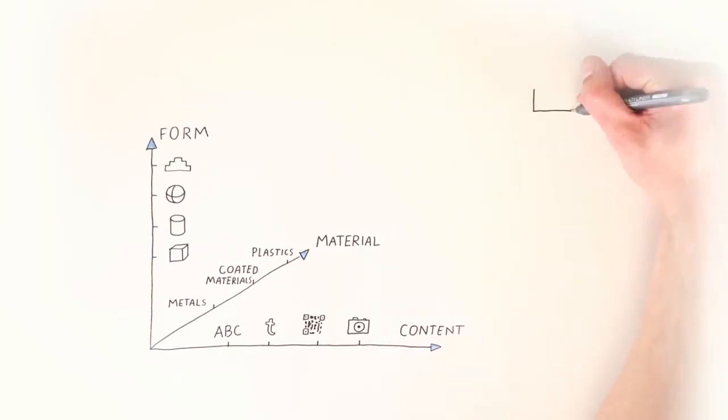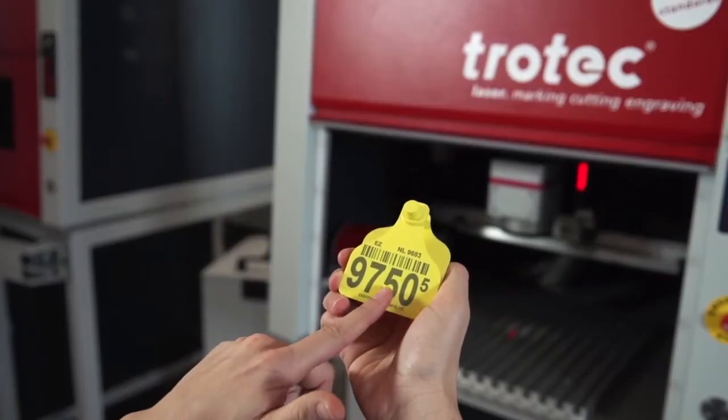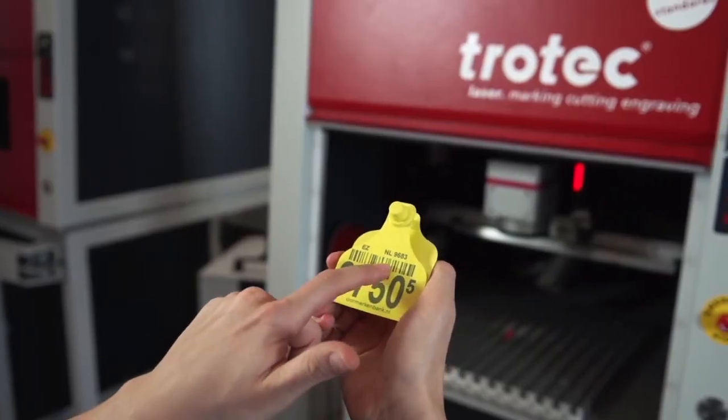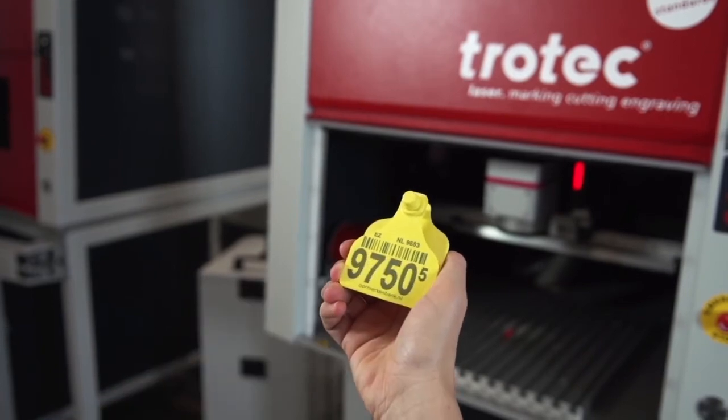Color change is a common process for marking with a fiber laser. The process provides high contrast labeling without damaging the surface of the material. The color change can be used with many different plastics and metals.